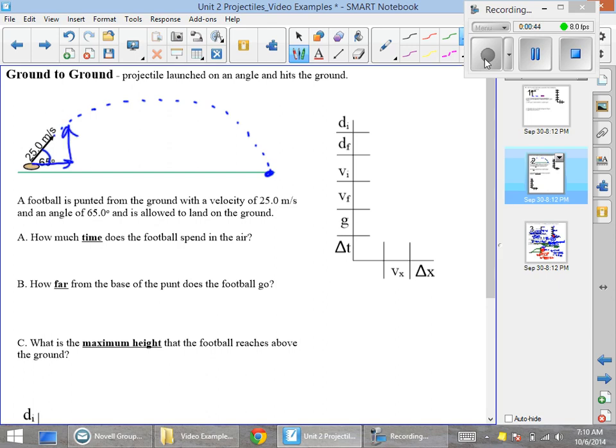We are going to use sine and cosine to help us out here. So we've got vx equals 25 cosine of 65 degrees—cosine because it is the adjacent one—and vy equals 25 sine of 65 degrees.